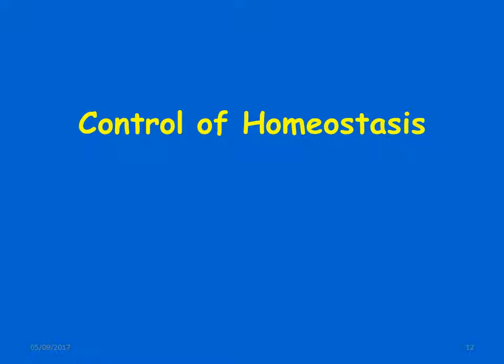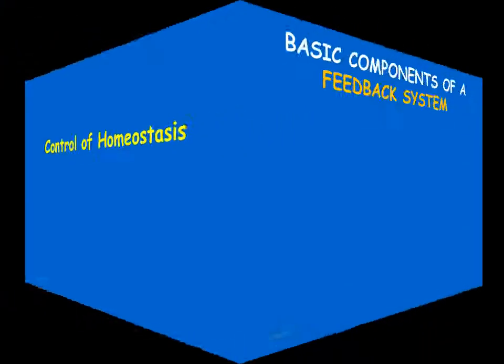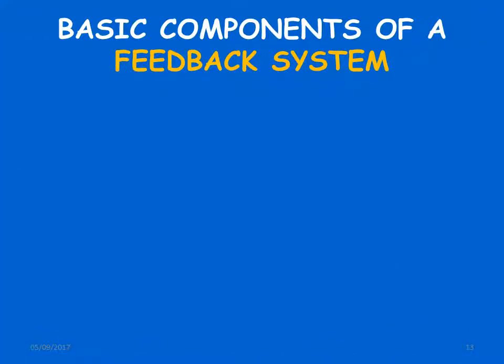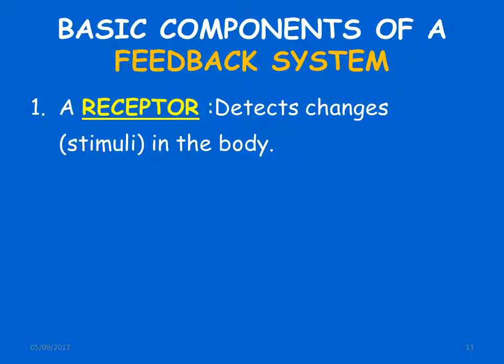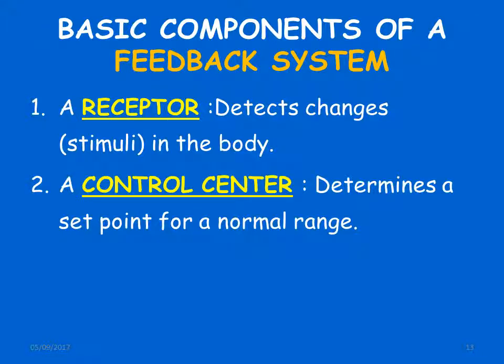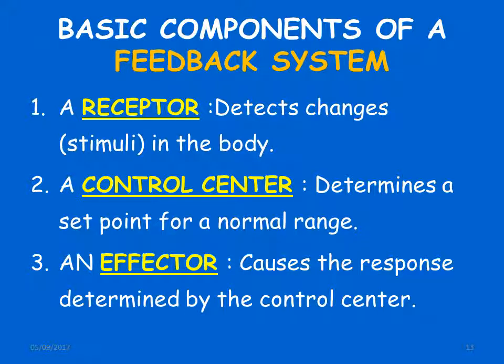The basic components of a feedback system are: first, a receptor which detects changes in the body — these changes are called stimuli. This information is sent to the control center, which determines the set point for a normal range. The information is then sent back to the effector organ, which causes the response determined by the control center.